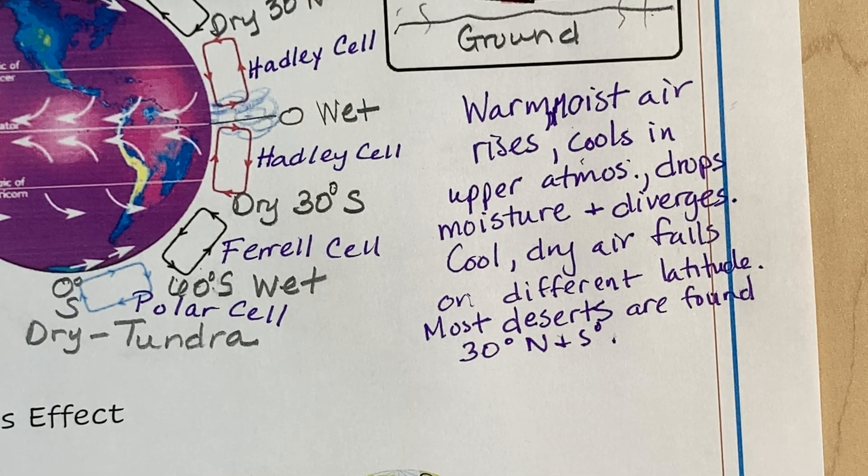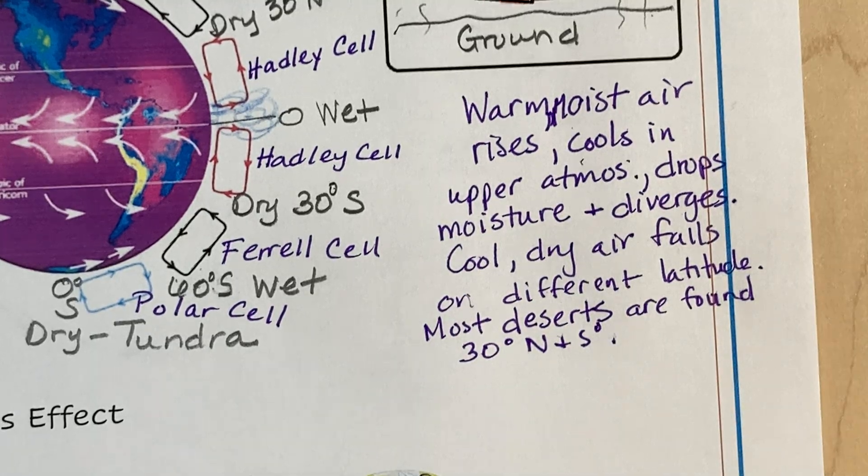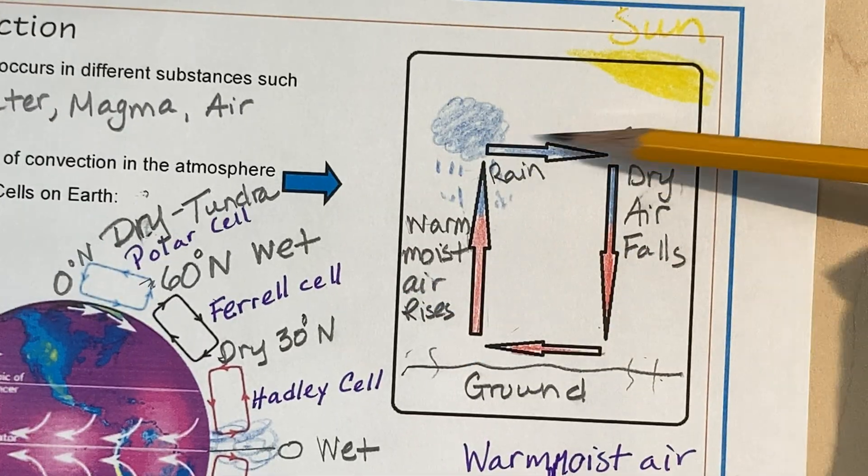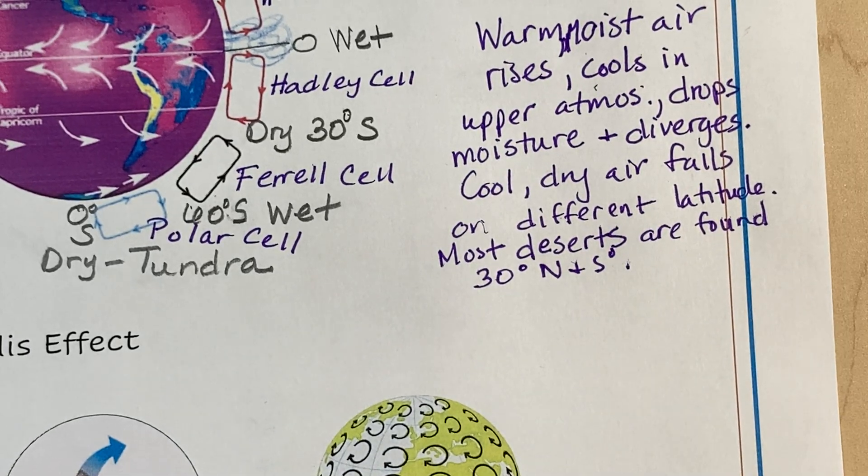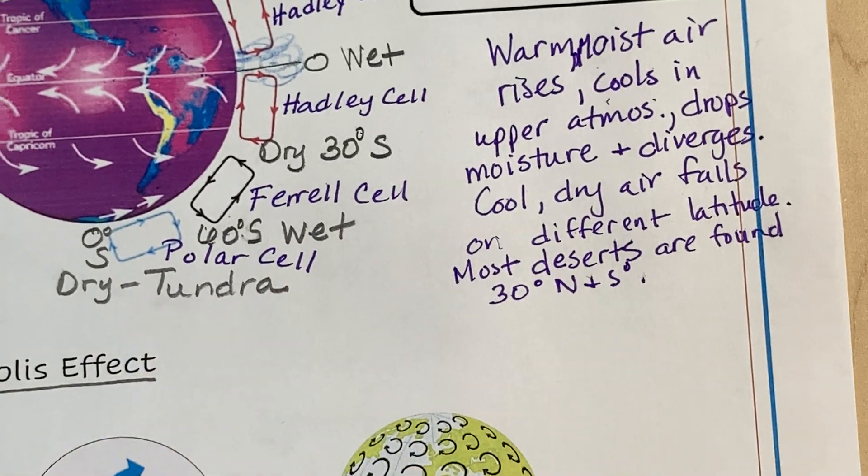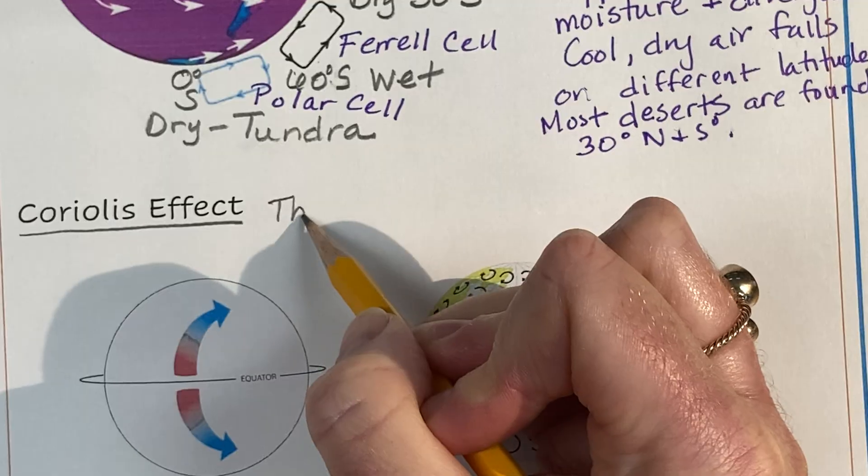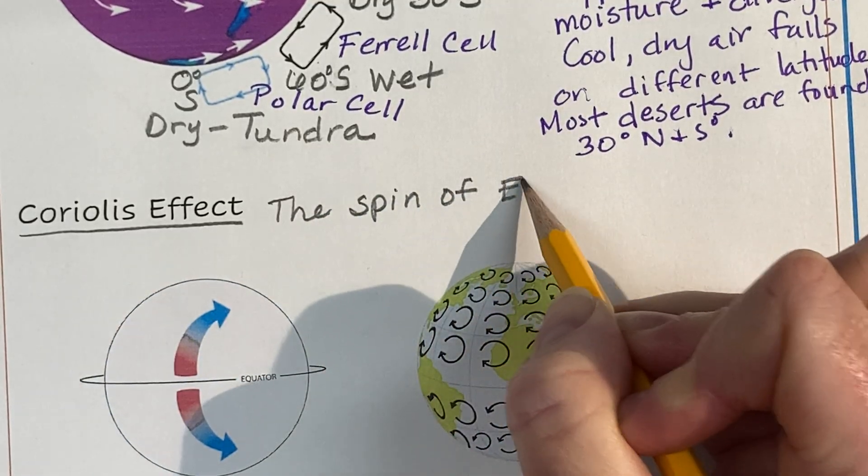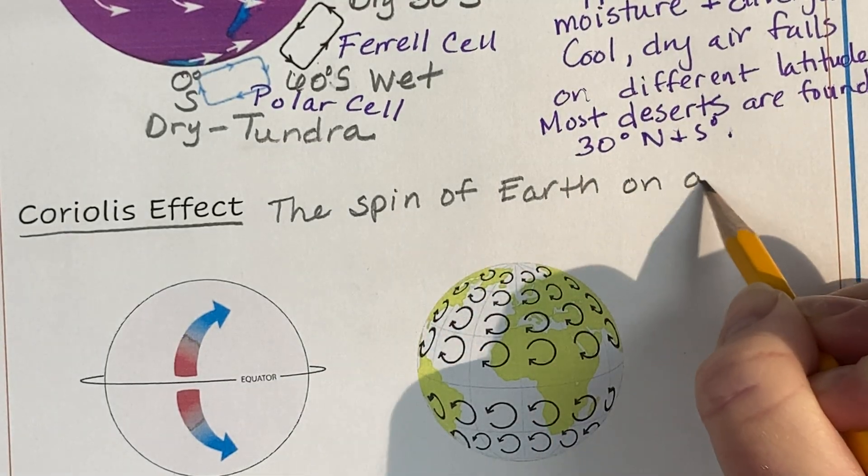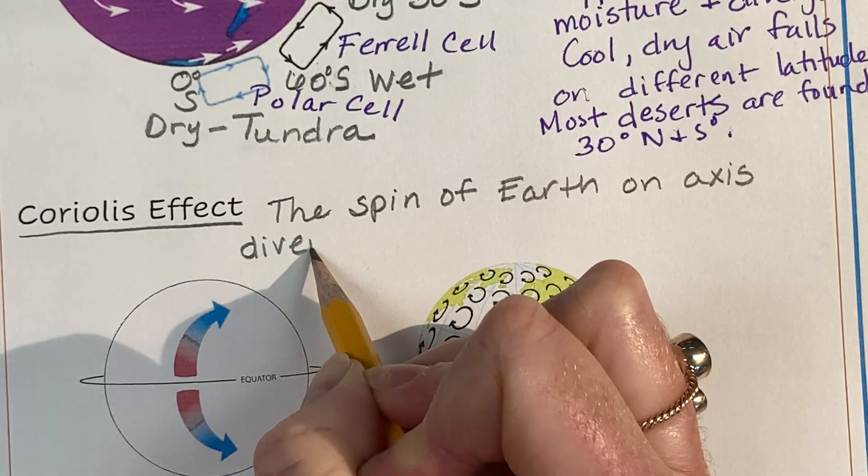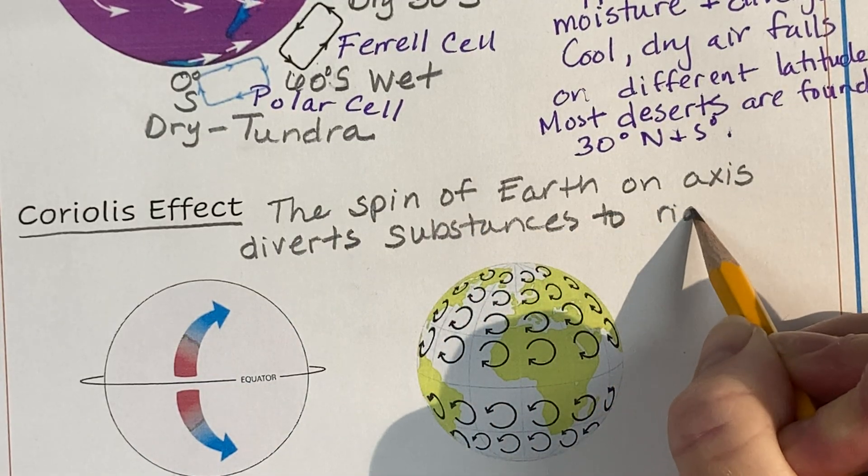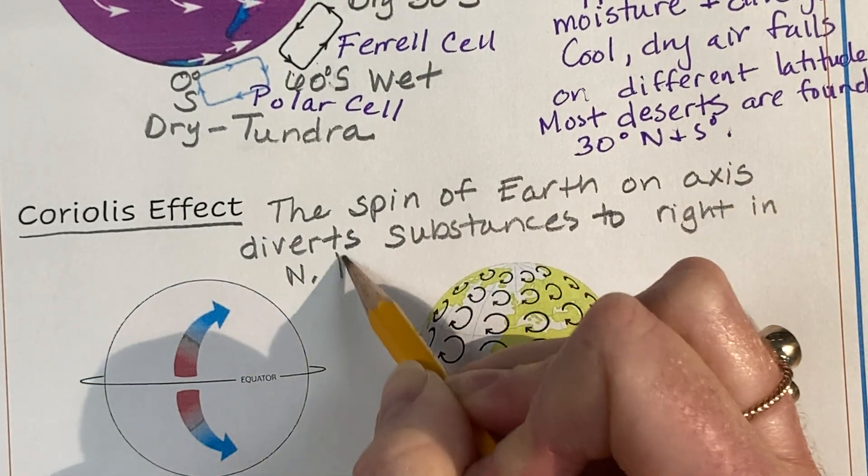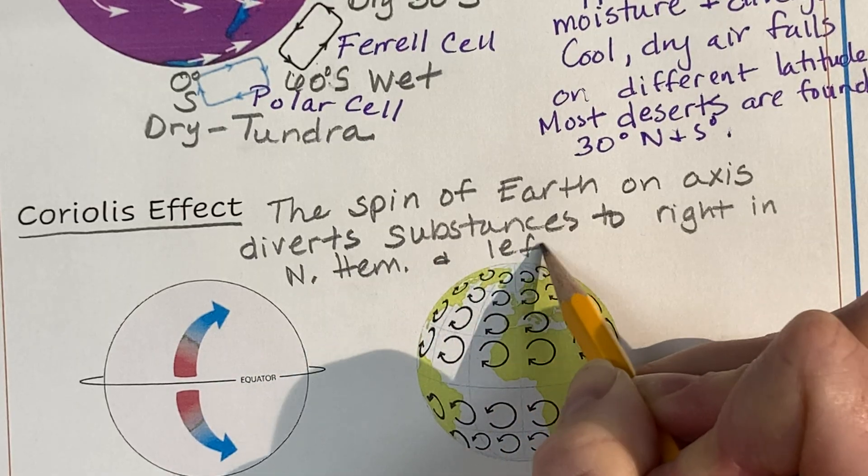Now that we know about convection, and again, you can pause the video to give yourself time to catch up on the writing. Now that we know that we have this process of convection, it is diverted, the rising and falling air is diverted because the earth spins. And this is what creates winds.